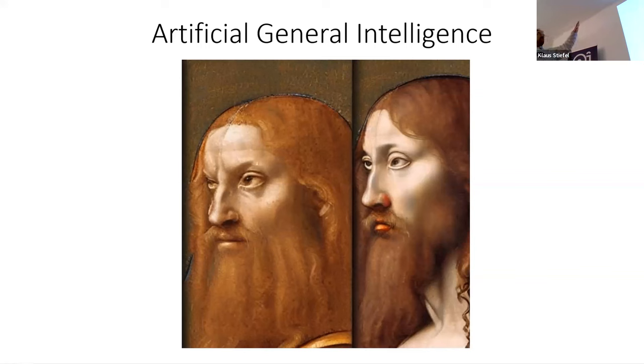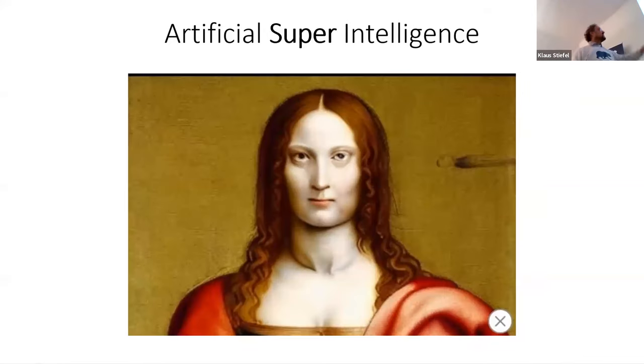So the question is, will we get to this? And then let's say we have artificial general intelligence that sits running on 10,000 supercomputer nodes. Why not just double or triple nodes, right? And it would be equivalent to, you know, doubling or tripling human brain, right? And then we would have something called artificial super intelligence.